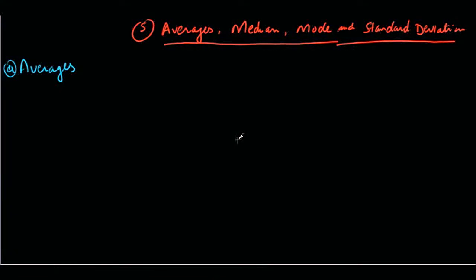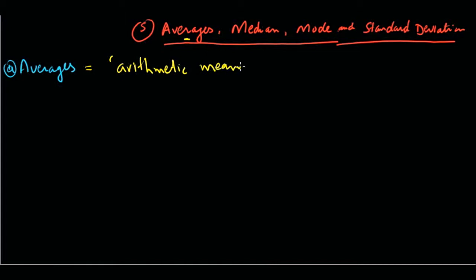Hello everyone, welcome to the fifth video in our math review series for the GRE quantitative section. Today's topic is statistics. On the GRE, statistics involves averages, median, mode, and standard deviation. Let's start with averages, which is one of the most common types of problems you'll see on the GRE. The GRE also likes to call averages the arithmetic mean.